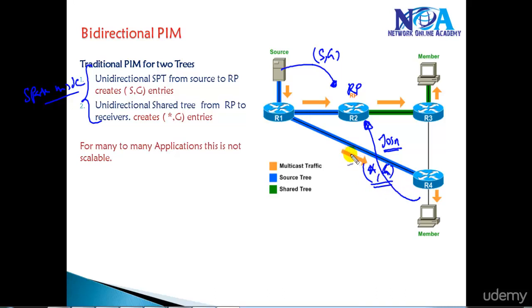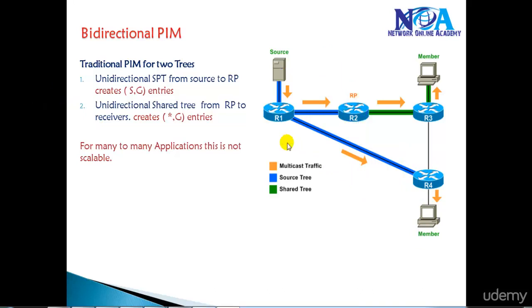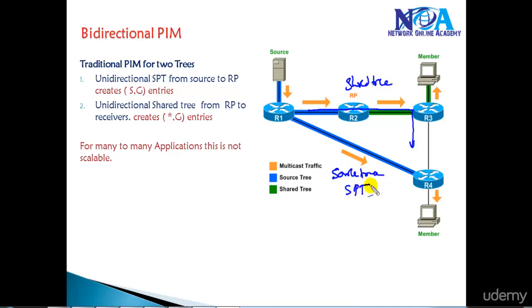Once both register with the RP, the RP provides information about the source, and the receiver is going to use the shortest path to reach the source and build something called a source tree. Initially it goes via the RP, which we call the shared tree; later on it falls back to the source tree, which is the shortest path calculated from sender to receiver.